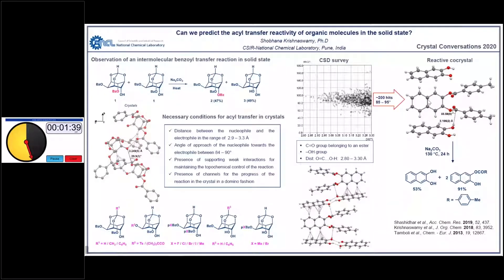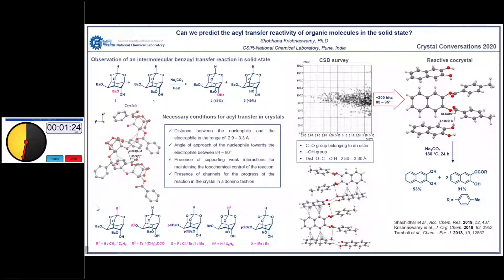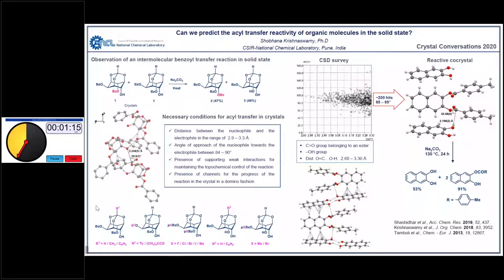With this information in hand, we decided to search the Cambridge Structural Database for reactive crystals. We searched for compounds containing an ester carbonyl group and a hydroxyl group separated by distances in the range of 2.8–3.3 Å. After filtering for the angle of approach of the nucleophile towards the electrophile in the range of 85–95 degrees, we identified the 2:1 co-crystal of naphthalene-2,3-diol and its di-para-methylbenzoate to test our hypothesis.